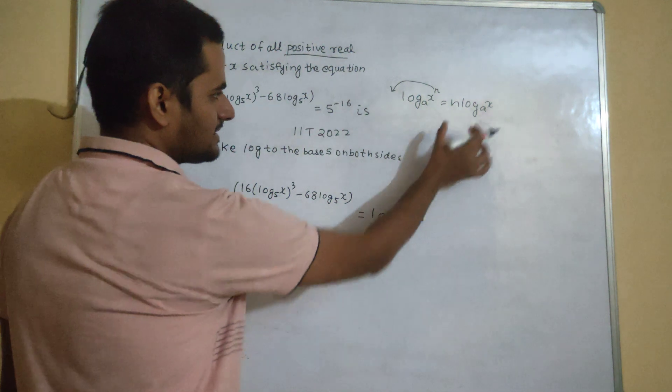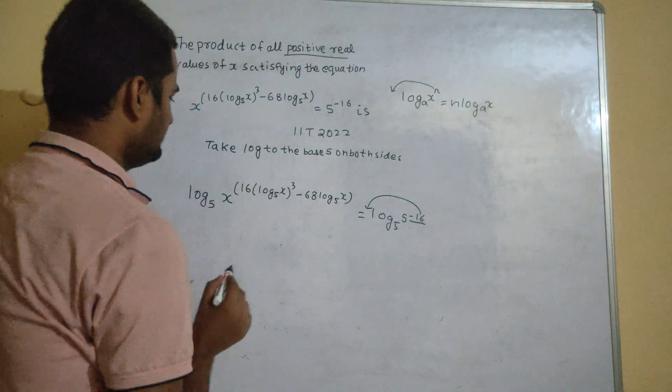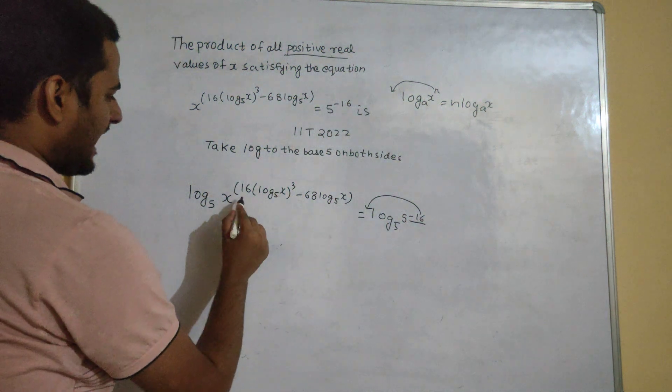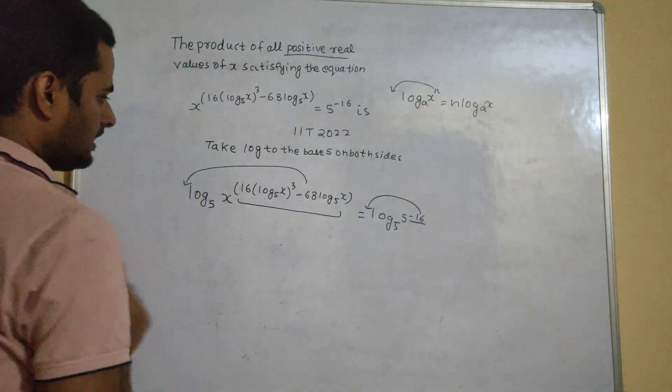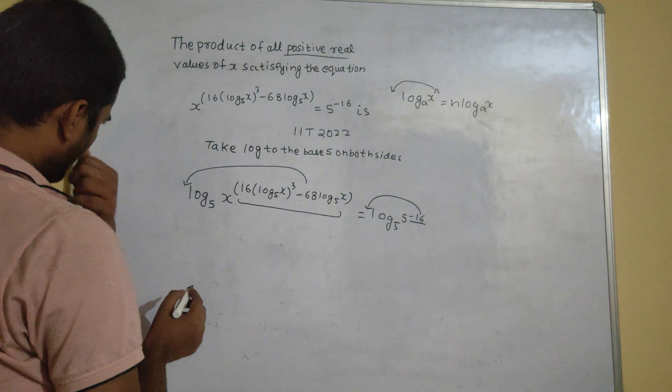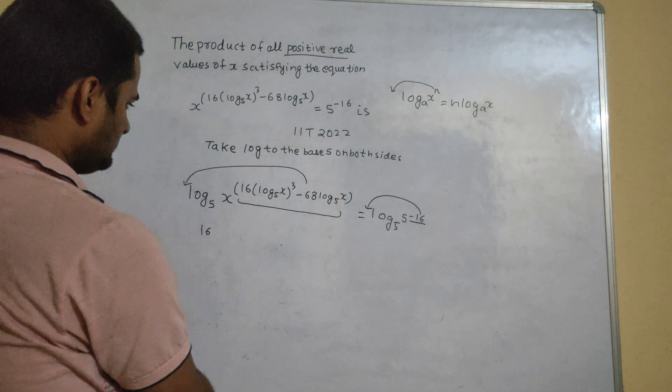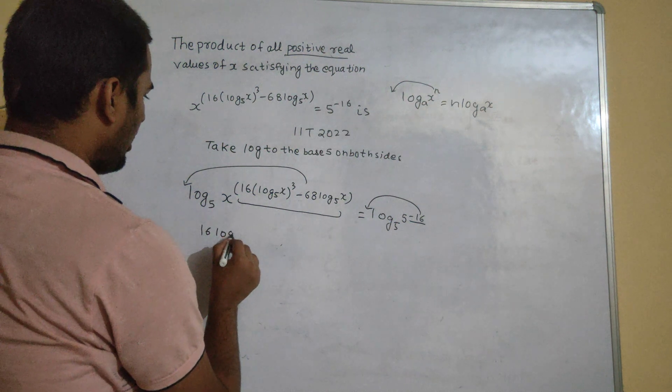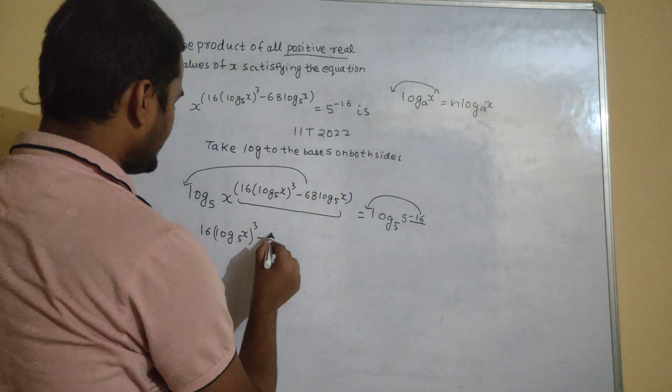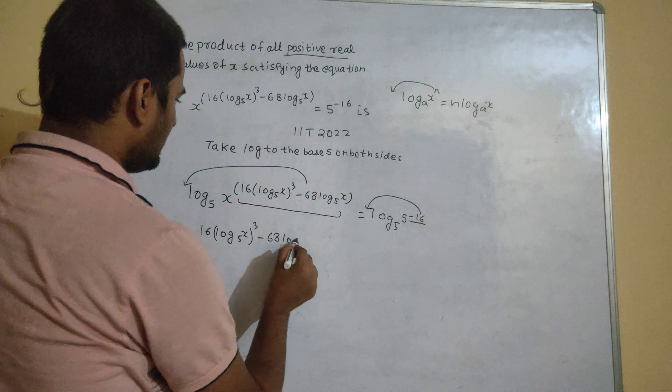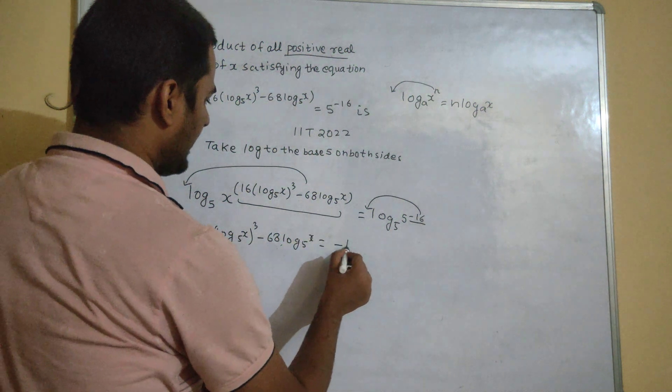Now here log 5 power minus 16 to the base. Again, as per this property of log, this minus 16 can come in front and this entire thing can also come in front. So this equation will look like 16 log x base 5 whole cube minus 68 log x to the base 5 is equal to minus 16.